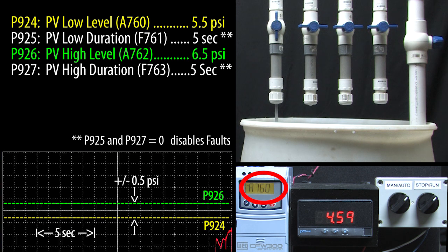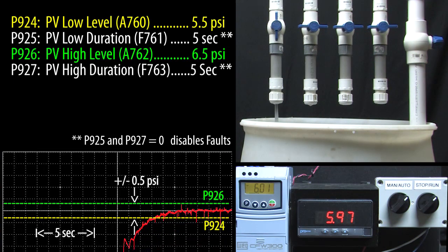And we immediately see an alarm telling us there is a low pressure. That's okay, we are ramping up. Again, if that ramp took longer than 5 seconds, the drive would issue a fault and shut down. This process ramped up in less than 5 seconds so we are in good shape and the alarm went away. Perfect.